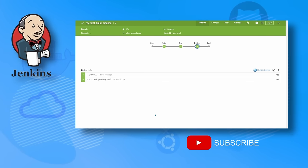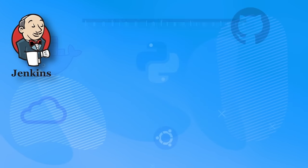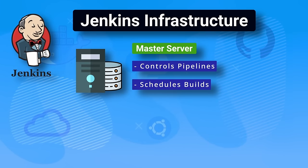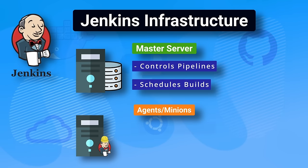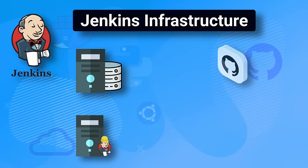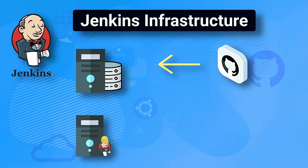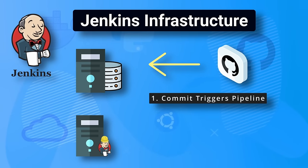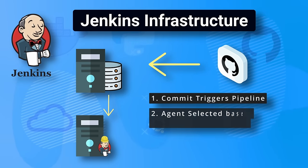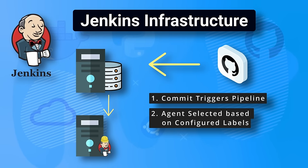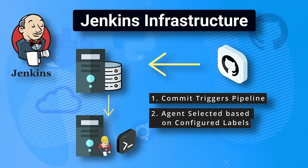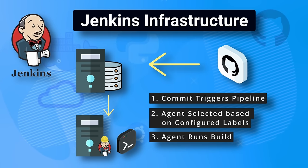Let's get into Jenkins infrastructure, which is pretty simple. First you have the master server, which controls the pipelines and schedules builds to agents. Then you have the agents, which run the build in their workspace. An example workflow: a developer commits code to a Git repository, the Jenkins master becomes aware of the commit, triggers the appropriate pipeline, and distributes the build to one of the agents based on labels.